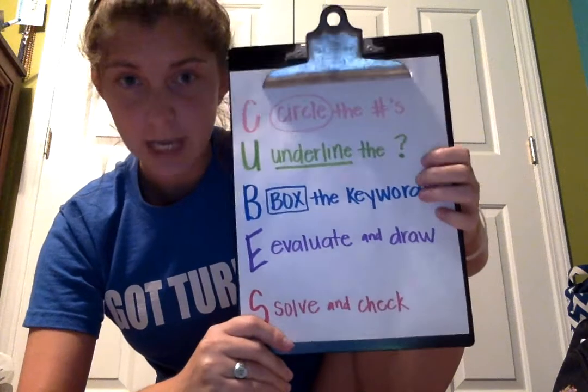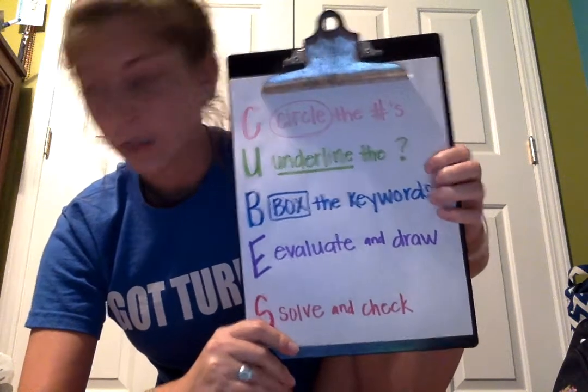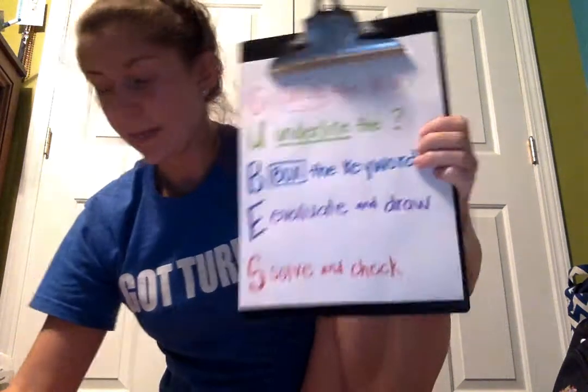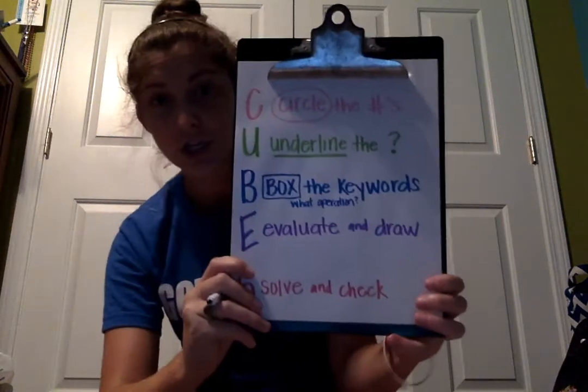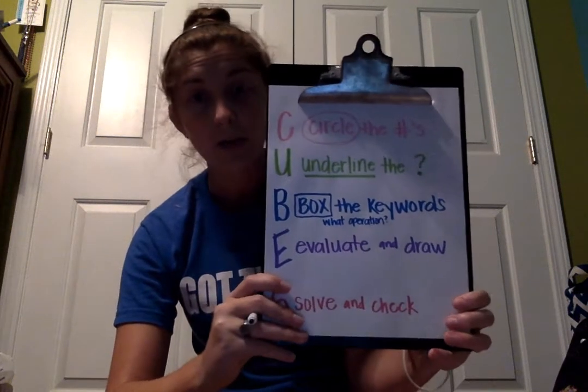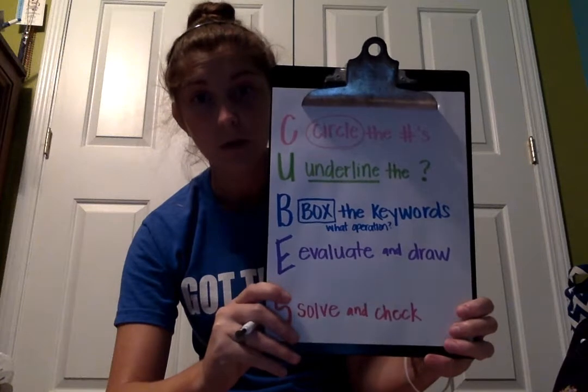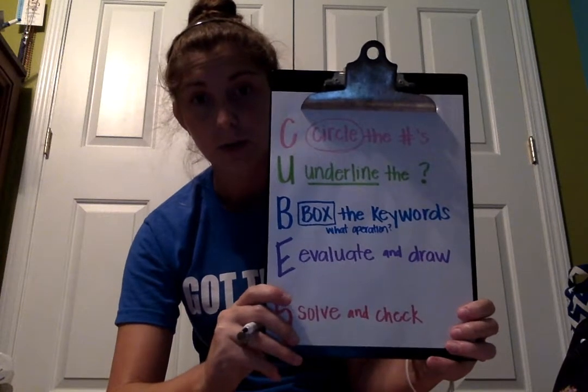The B is to box in the key words. These key words are going to tell you about the operation — what words signal which operation you're using. That's where those words I just showed you come in handy, so you can know what operation you're going to be doing in that problem.